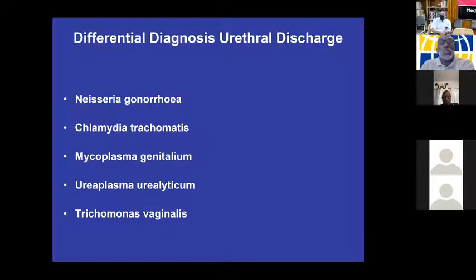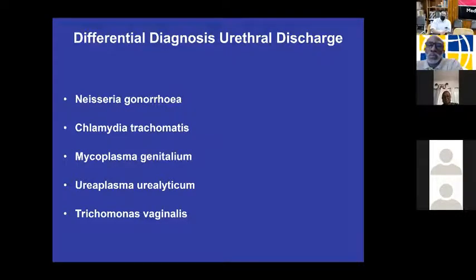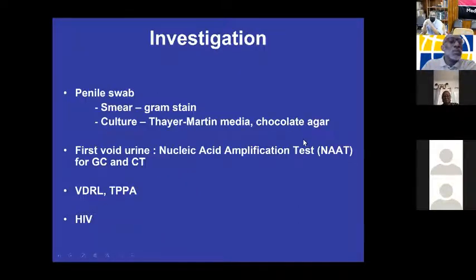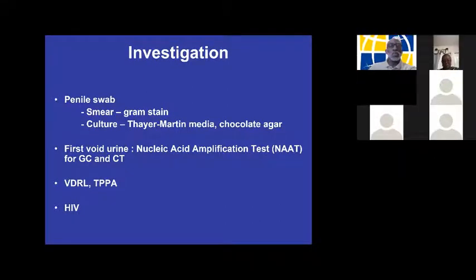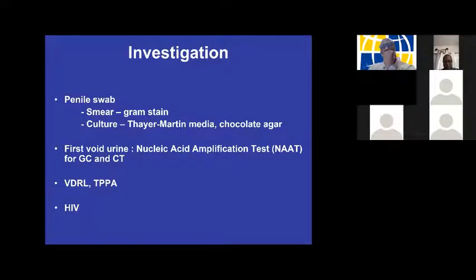The differential diagnosis of urethral discharge: the big ones in our part of the world are gonorrhea and chlamydia, but also keep in mind Mycoplasma genitalium, Ureaplasma urealyticum, and Trichomonas. How to investigate: collect a swab, do a smear, gram stain, and culture. Collect first void urine for the NAAT — a PCR test for gonorrhea and chlamydia. Screen him for syphilis with VDRL and TPPA, and screen for HIV.